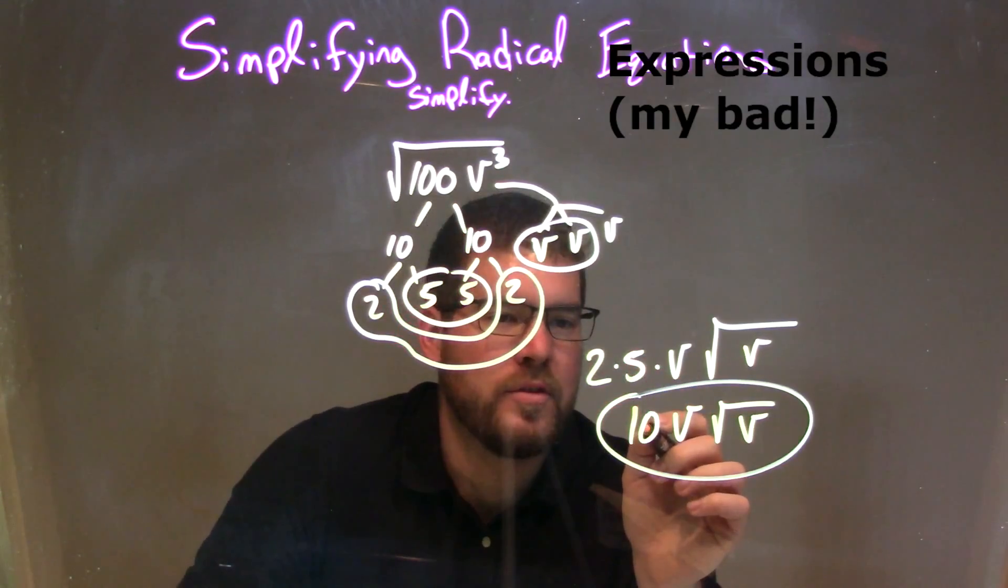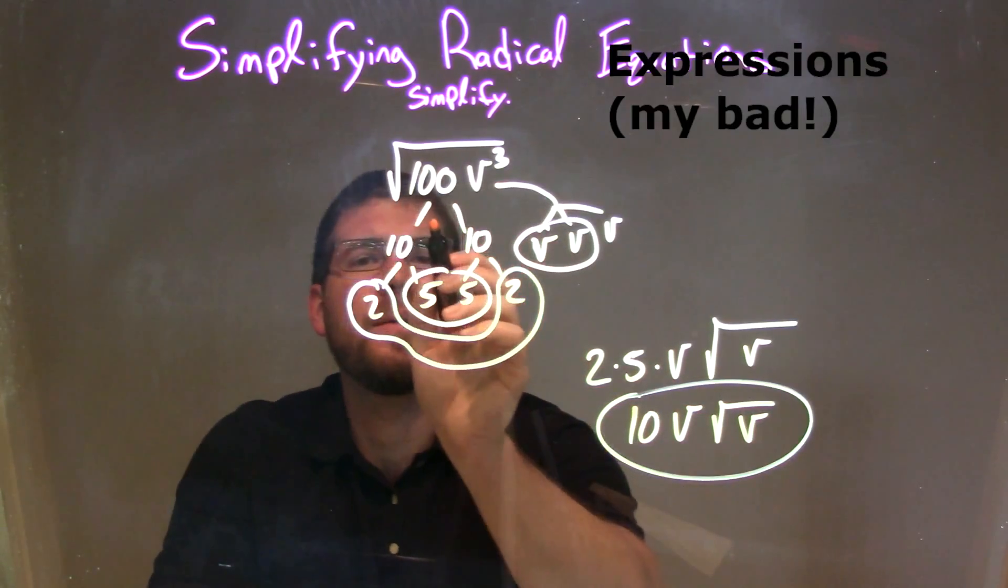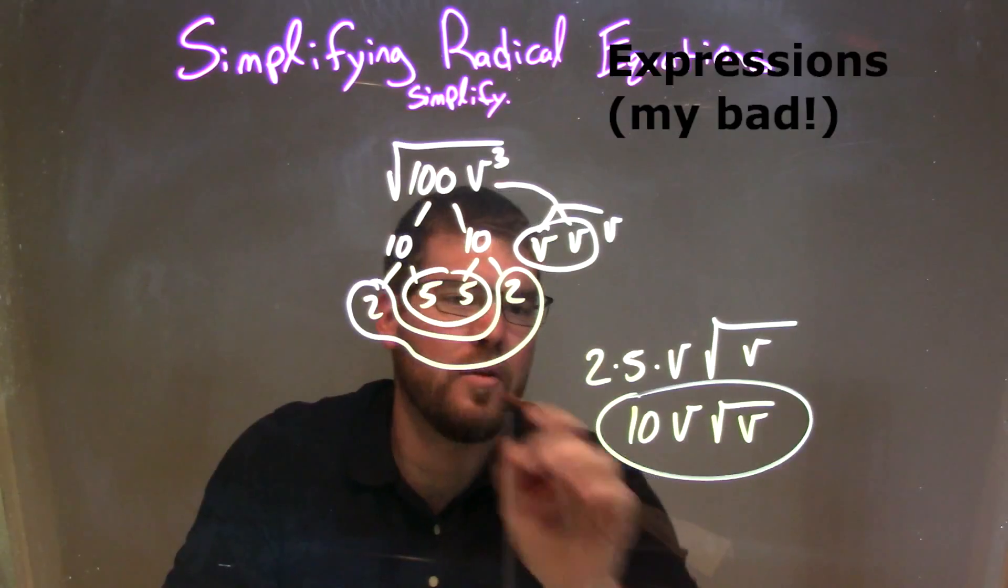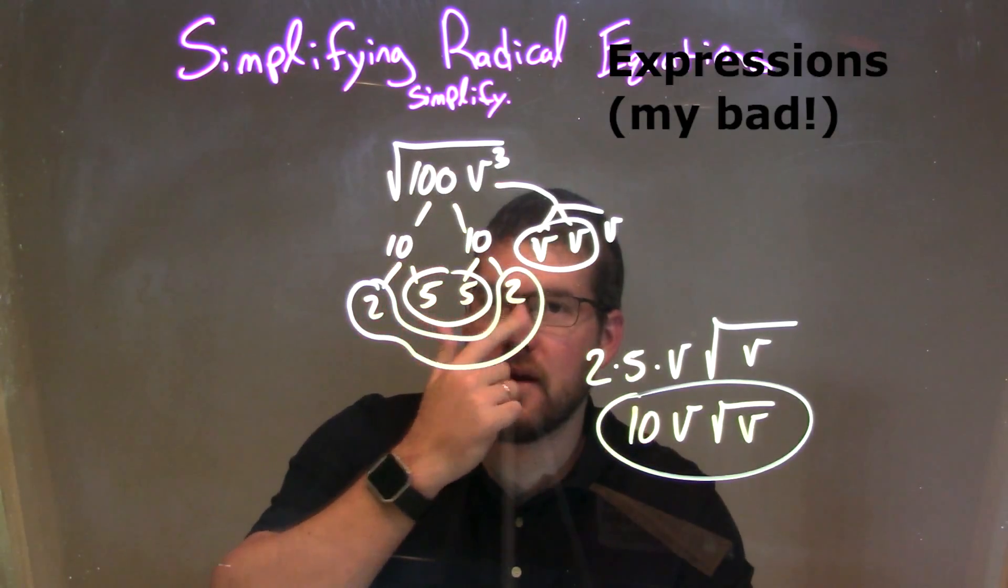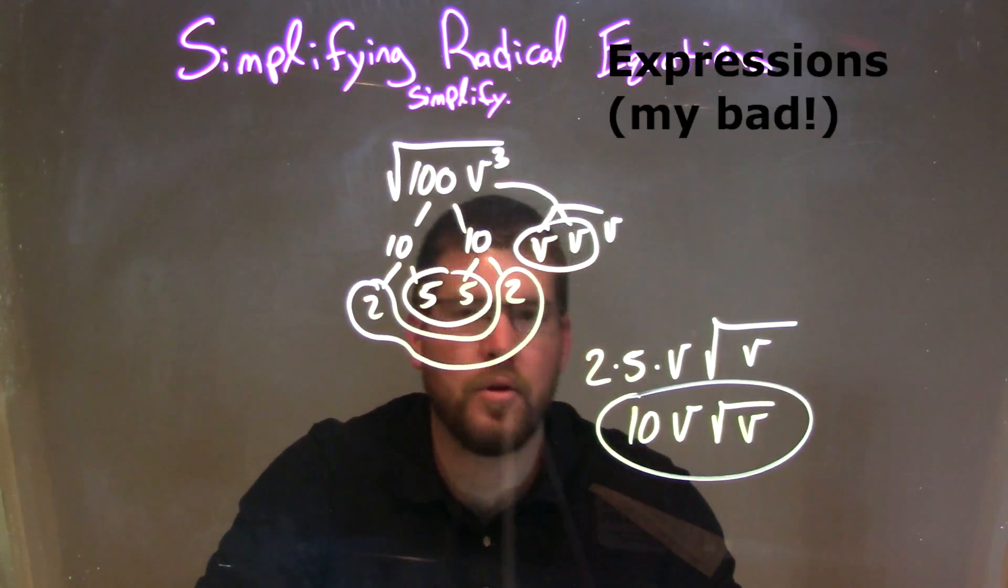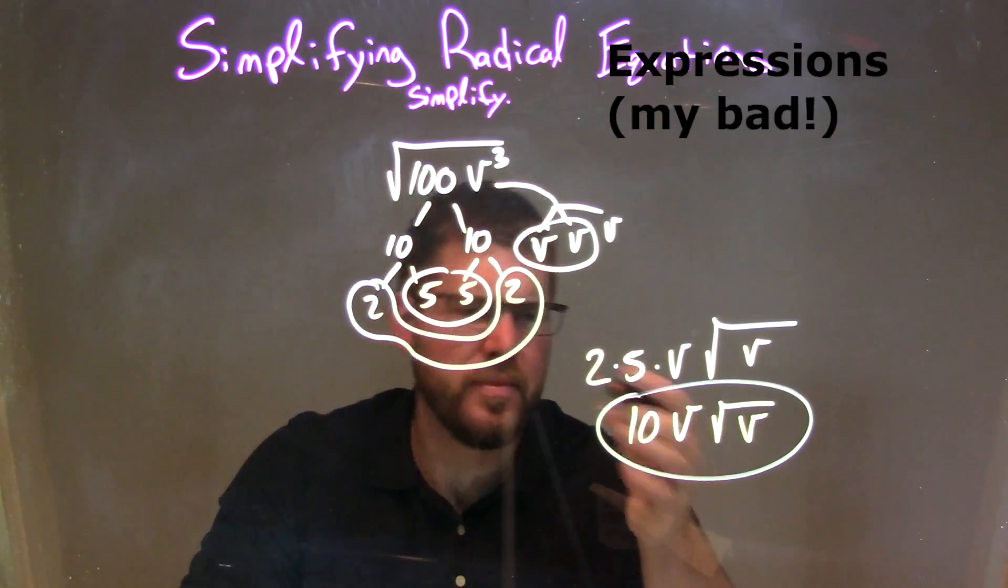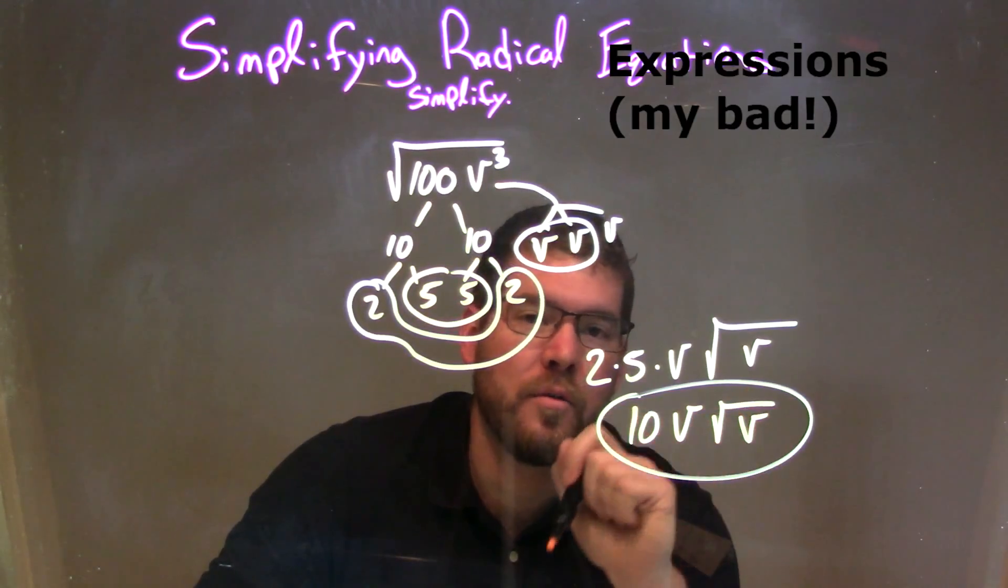Then from there, I simplify 2 times 5 was 10, and so I had 10v times square root of v. Now you can see when I was talking about a pair of 10s, if I just circled that pair, I would have been done, and I still would have gotten the same answer on the outside. If I circled that 10, one pair of 10 on the outside. There's nothing else to break down. You can do it that way, but for good measure right now, we're going to simplify all the way. Either way, our final answer here is just 10v times the square root of v.